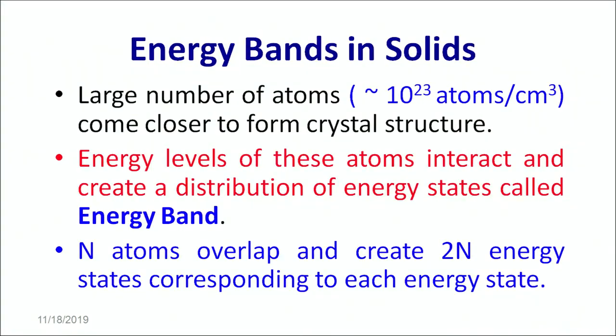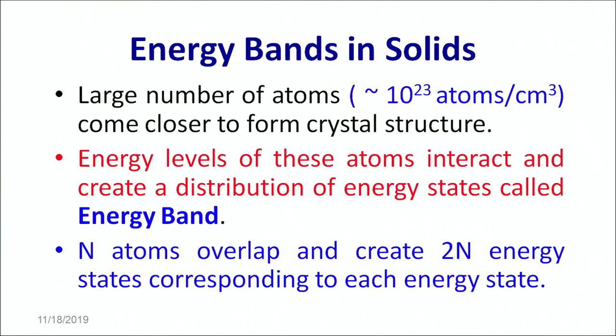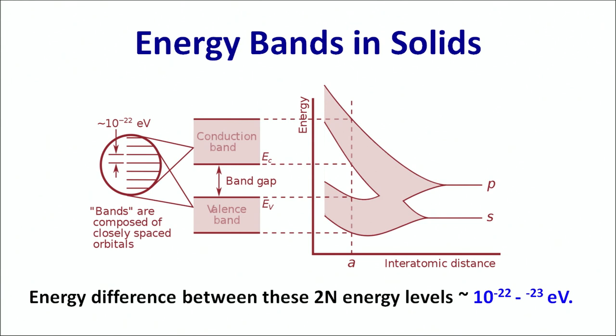In case of solids, there is a collection of large number of atoms which come closer to form the crystal structure. The energy levels of these atoms interact and create a distribution of energy states known as energy bands. The N atoms which overlap together create two N energy states corresponding to each energy state. Let's understand that in detail with the help of a graphical representation. What we represent is large number of atomic orbitals coming together and overlapping.